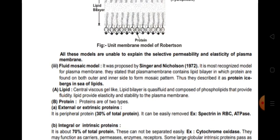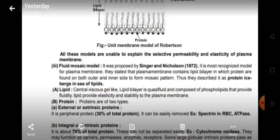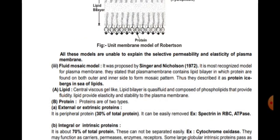Proteins in the lipid bilayer are of two types. External or extrinsic proteins (peripheral proteins) constitute about 30% of total protein and can be easily removed — examples include spectrin in RBCs and ATPase. Integral or intrinsic proteins are present inside and cannot be separated easily because they are embedded within. They may function as carriers, permeases (responsible for permeability), enzymes, and receptors. Some large globular intrinsic proteins can pass through the membrane.